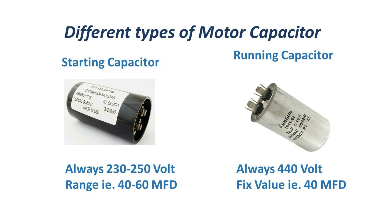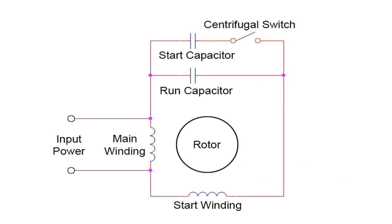Running capacitors have fixed values like 2, 4, 6, 10, 20, 30, or 50 MFD, and are always rated at 440 volts AC. By using a running capacitor in the motor circuit, it improves the power factor and reduces the current drawn by the motor.